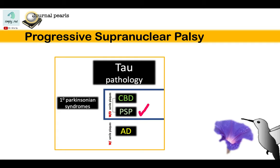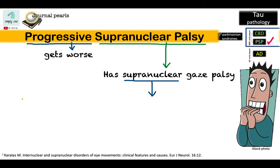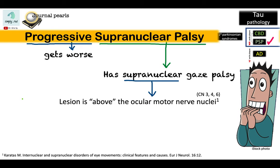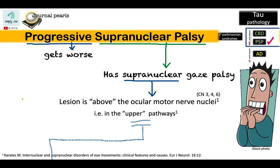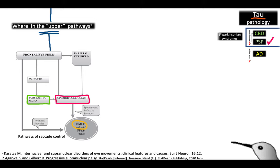To start our thinking process, let us get clues from the name. The word 'progressive' refers to the clinical course, while 'supranuclear palsy' refers to the type of gaze palsy. 'Supranuclear' means the lesion is above the ocular motor nerve nuclei — in the upper pathways — which involves the substantia nigra, the superior colliculus, and the rostral interstitial nucleus of the medial longitudinal fasciculus.